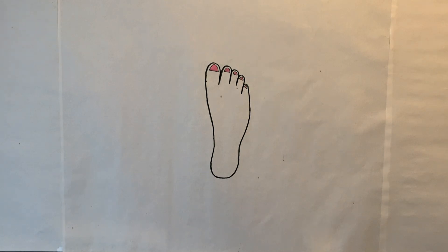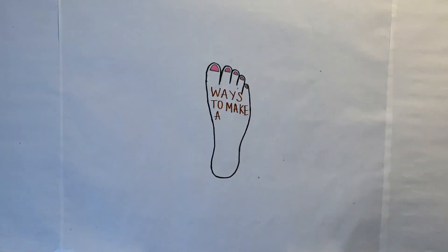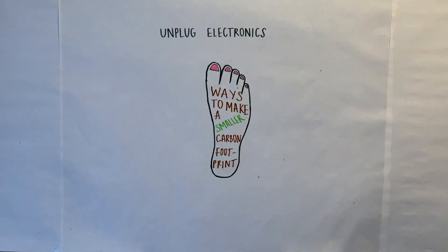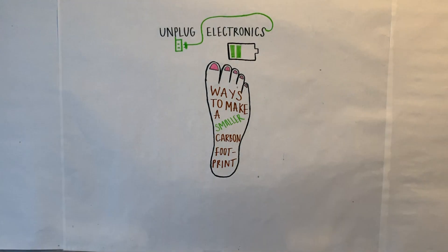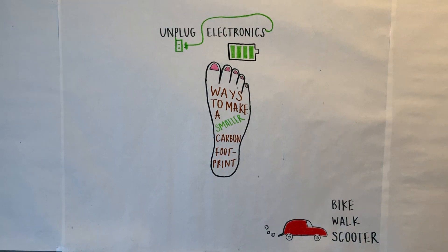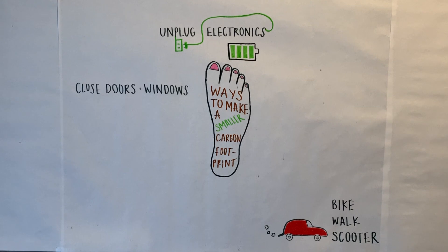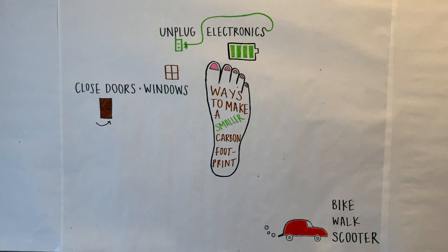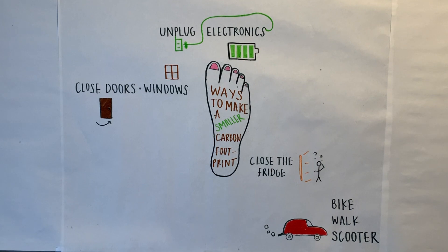Here are ways you can make a smaller carbon footprint. Unplug electronics and chargers — once your device is fully charged, unplug it. Bike, walk, or scooter when you can, so there are fewer cars on the road burning fuel. Keep your doors and windows closed if the air conditioning or heat is on. And close the refrigerator door — figure out what you want before you open it.